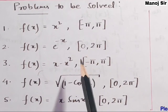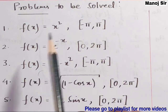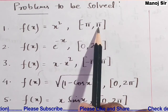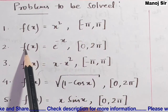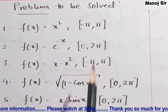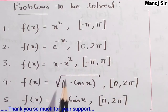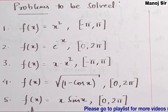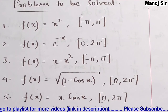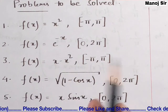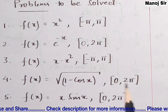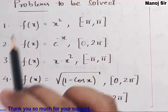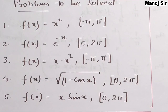Now let us preview the problems we are going to solve. The problems include: f(x)=x² on [−π, 2π]; f(x)=e^(−x) on [0, 2π]; f(x)=x−x² on [−π, π]; f(x)=√(1−cos x) on [0, 2π]; and f(x)=x sin x on [0, 2π]. All problems are equally important — go through each one, and you can find complete solutions in the playlist via the i-button. Thank you.